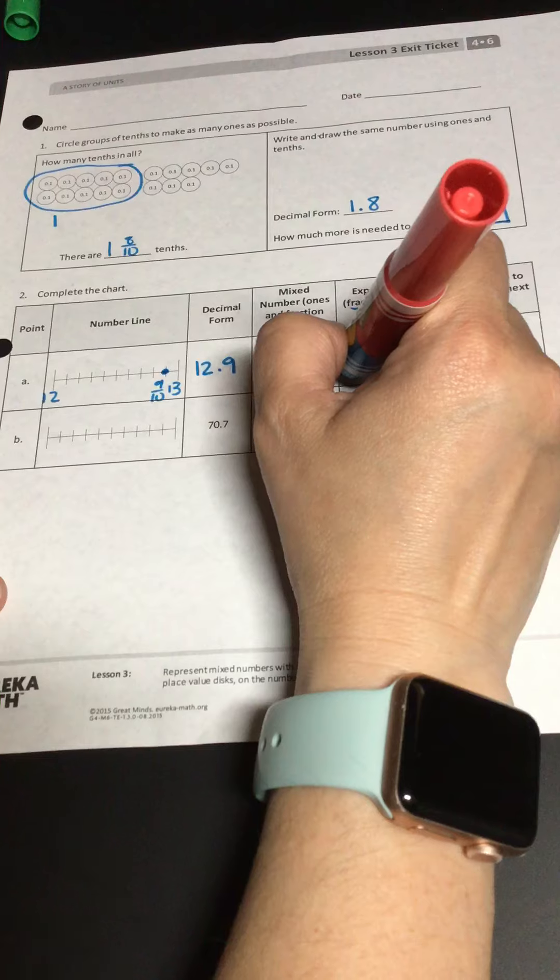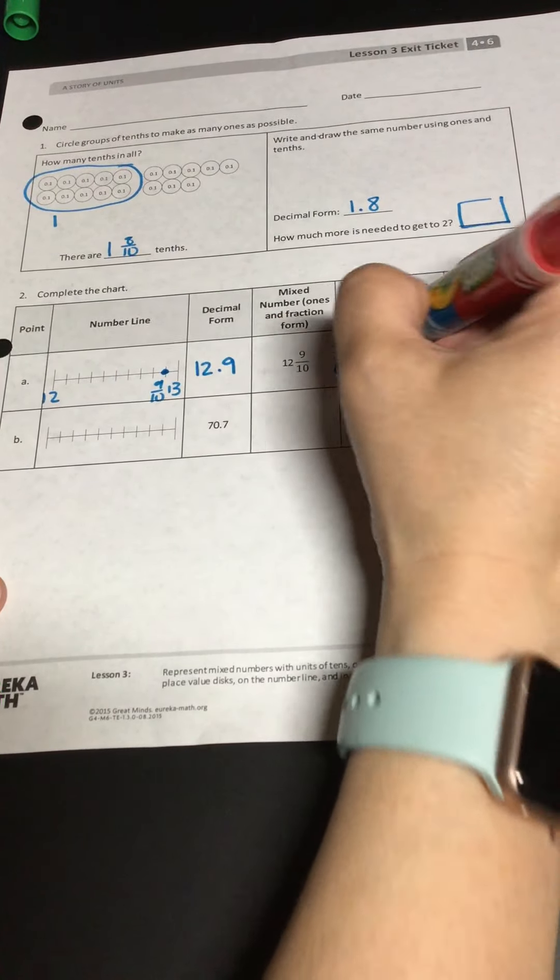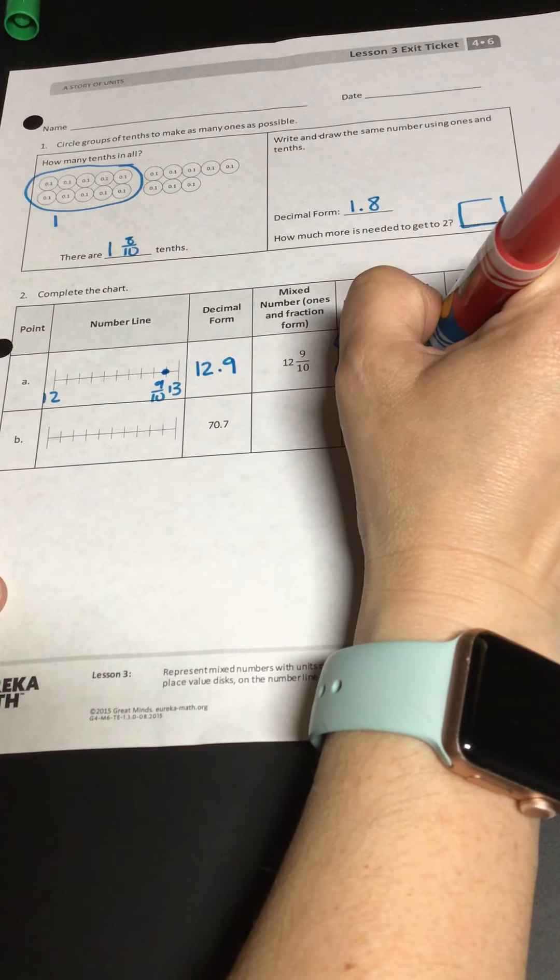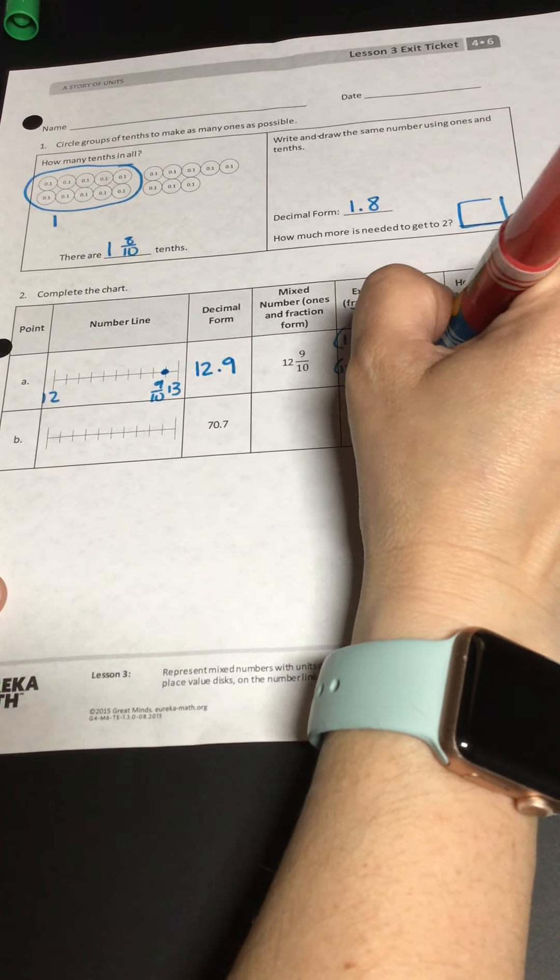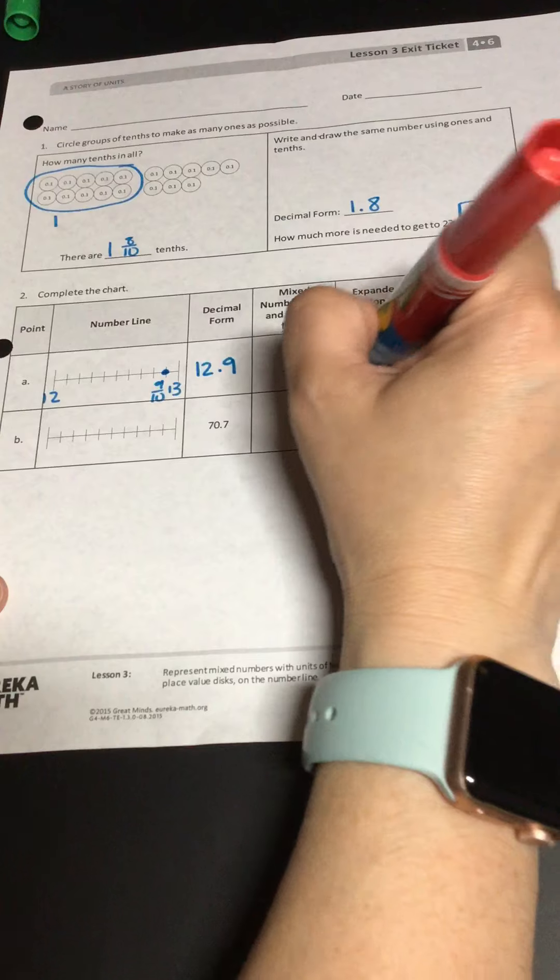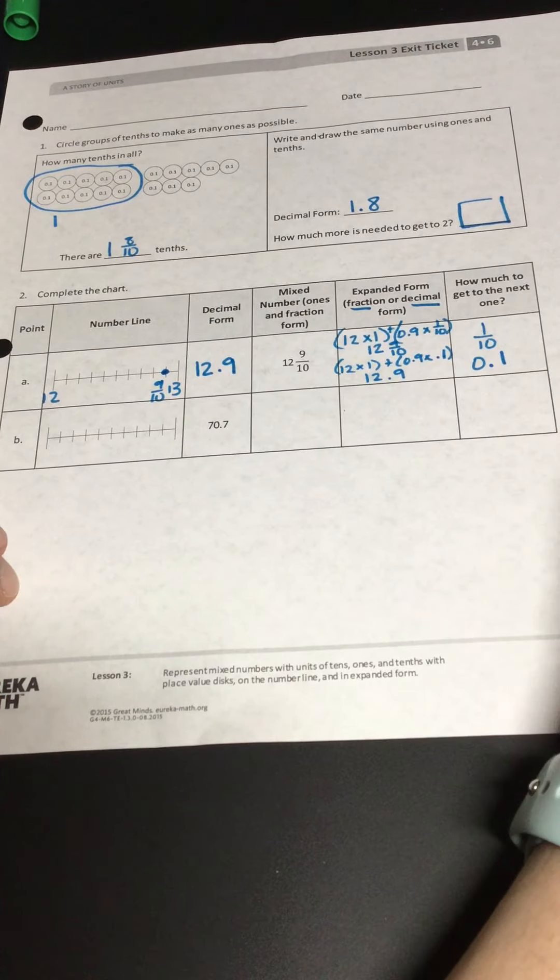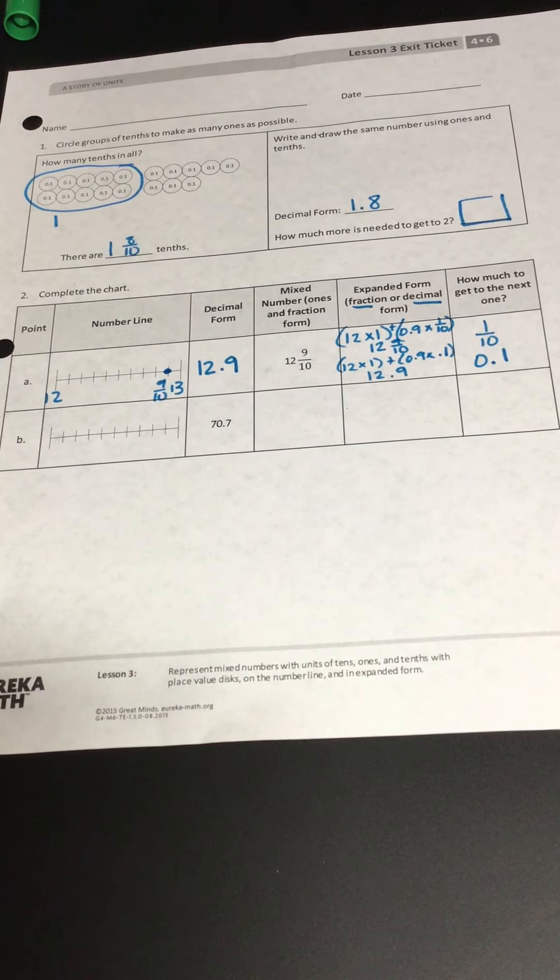And then if I do the decimal, because it wants fractions and decimals, I'm going to do 12 times one. And then plus 0.9 times 0.1. Which would give me 12.9.